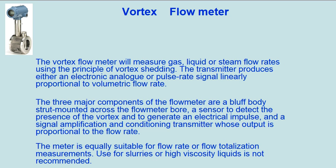The Vortex Flow Meter will measure gas, liquid, or steam flow rates using the principle of vortex shedding. The transmitter produces either an electronic analog or pulse rate signal linearly proportional to volumetric flow rate. The three major components are: a bluff body strut mounted across the flow meter bore, a sensor to detect the presence of the vortex and generate an electrical impulse, and a signal amplification and conditioning transmitter whose output is proportional to flow rate. The meter is equally suitable for flow rate or flow totalization measurements. Use for slurries or high viscosity liquids is not recommended.